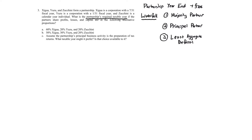Least aggregate deferral looks at all possible year ends, tests the partners using a weighted average approach based on ownership, and determines which year end gives the least amount of deferral by counting months. So in scenario A, we've got 60% owned by X, 20% owned by Y, and 20% owned by Z. X has a July 31st year end, Y has a January 31st year end, and Z has a December 31st year end — they all have different year ends.